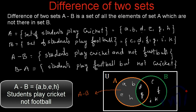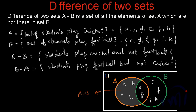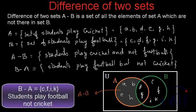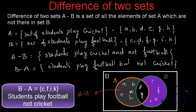The common elements D and G, which like to play both games, are not included in A minus B. So A minus B represents the set of students who like to play cricket but not football. Similarly, the set of students who like to play football but not cricket is represented by B minus A, which is this area in the Venn diagram.